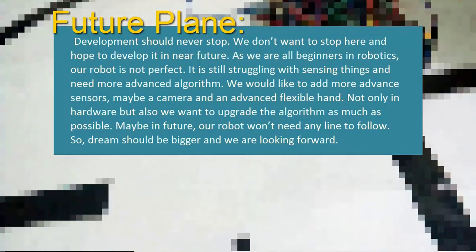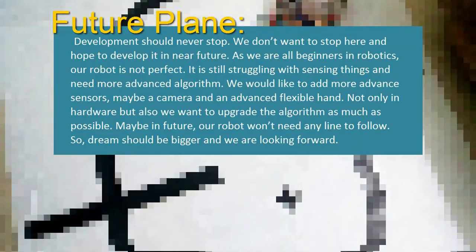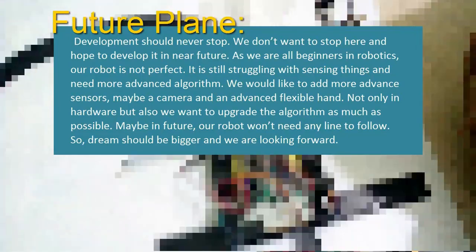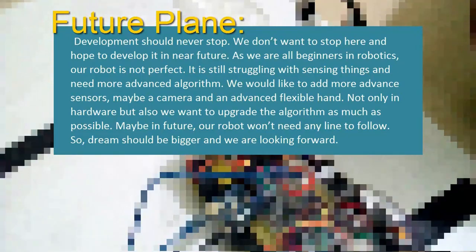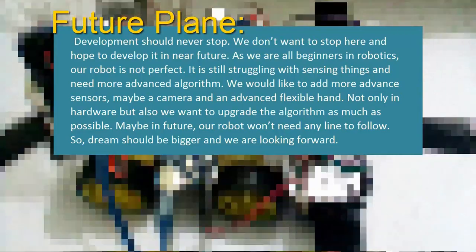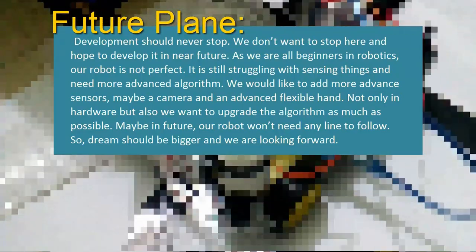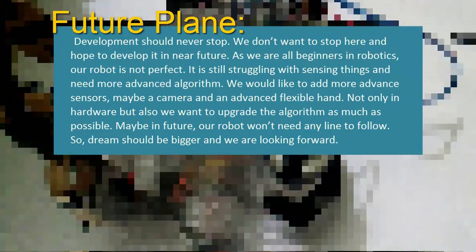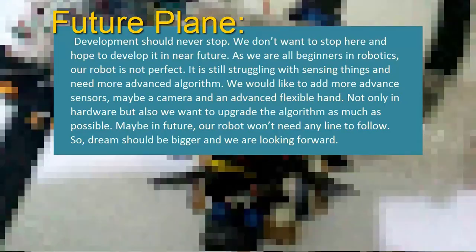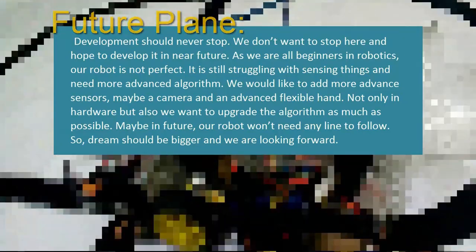As we are all beginners in robotics, our robot is not perfect — it is still struggling with sensing things and needs more advanced algorithms. We would like to add more advanced sensors, maybe a camera and an advanced flexible arm. Not only in hardware, but we also want to upgrade the algorithm as much as possible. Maybe in future our robot won't need any line to follow. Our dream should be bigger and we are looking forward.